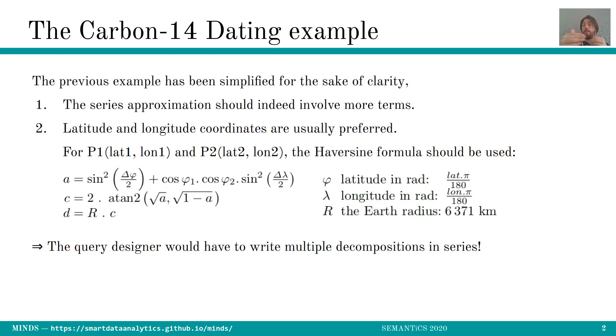First off we could have push the approximation in series to further terms and involve more terms. And obviously the more you involve terms the more complicated it is to type properly the queries. And obviously we have been placing ourselves in a Cartesian coordinate system and it's not the case at all on the earth. So usually you have the lat and the longitude. And when you have latitude and longitude you need to play with the Haversine formula which implies sines, cosines, square root, and even an atan2 function which is really complicated now to approximate.